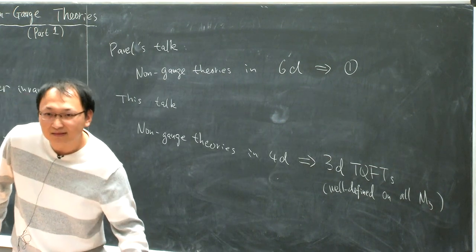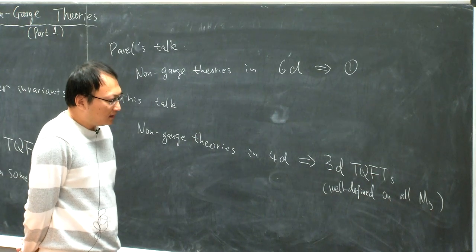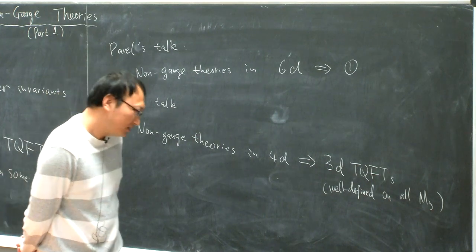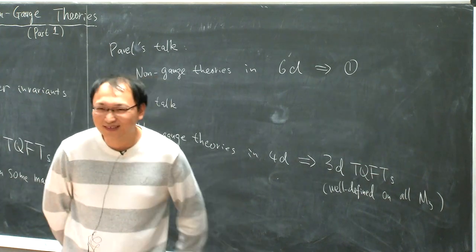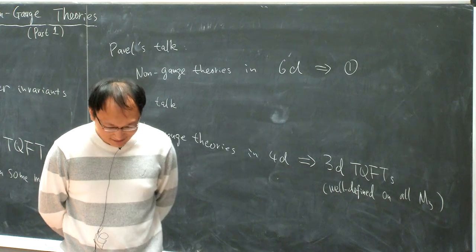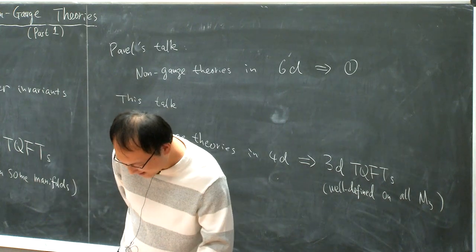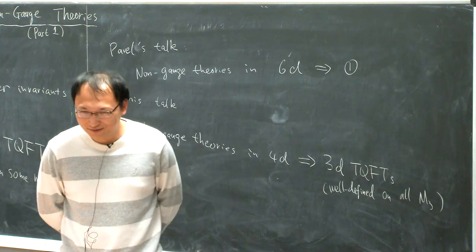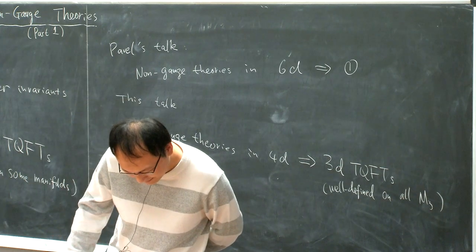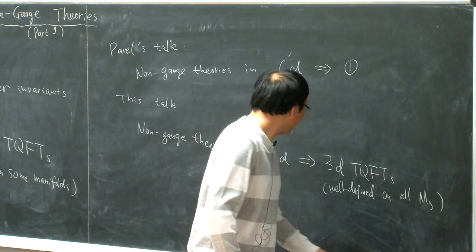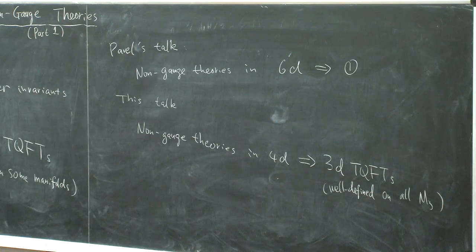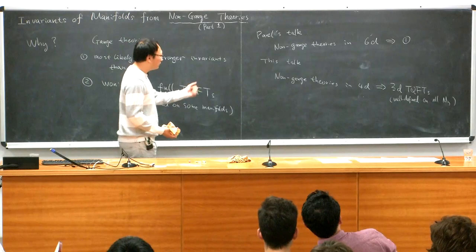Is that 2+1 or 3+1? It's 2+1. It would be very nice if one could somehow lift this into 4D, as we don't have any very interesting full 4D TQFT. So we know that for gauge theory, you start with the gauge group and the matter representation. So what can you do for non-gauge theory?